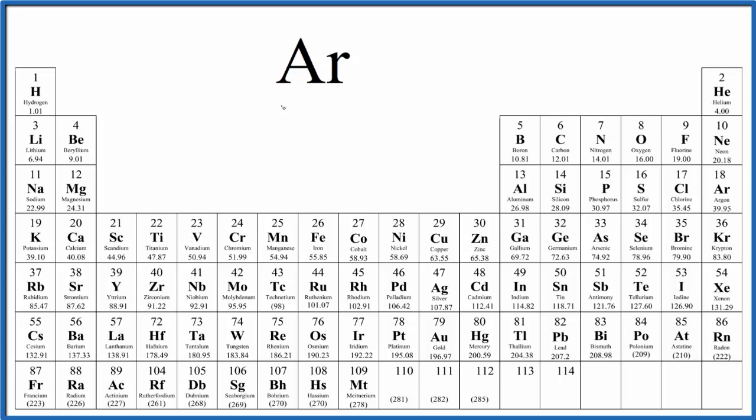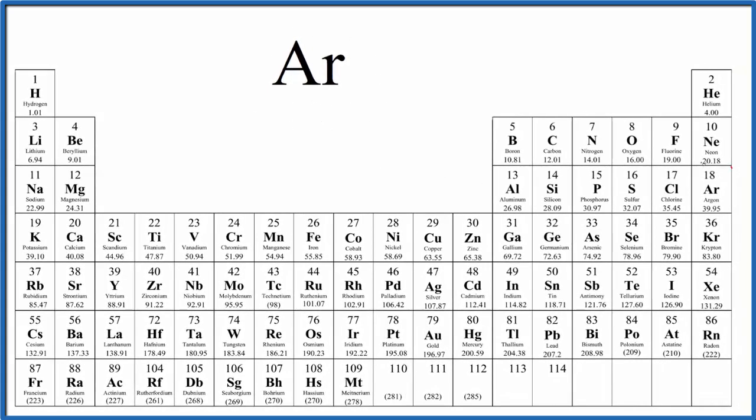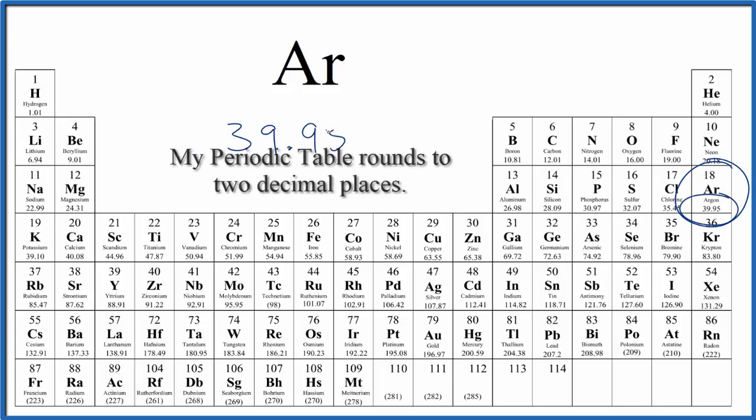To calculate the molar mass for something like argon, it's often called the atomic mass because it's just one atom. We go to the periodic table, right here is argon, and we have 39.95. And the units for this are grams per mole. So this is the molar mass of argon gas.